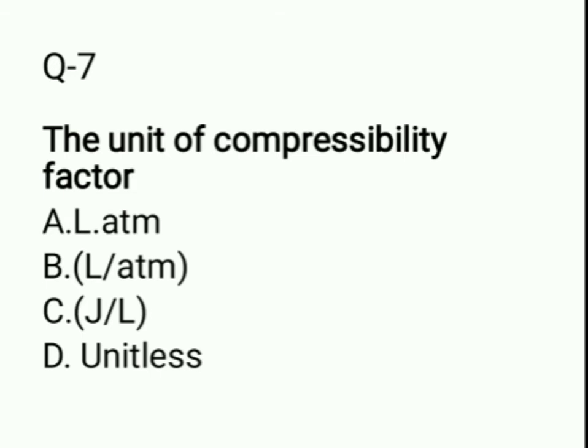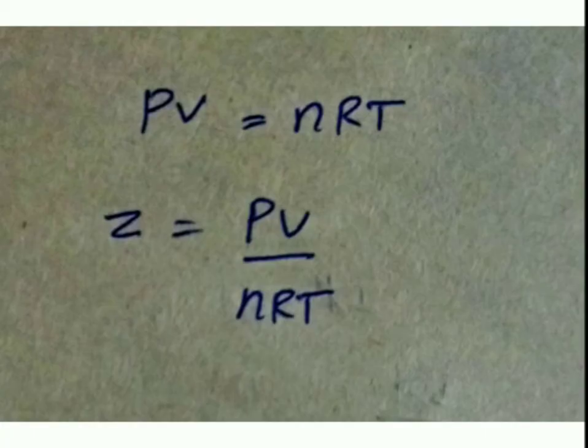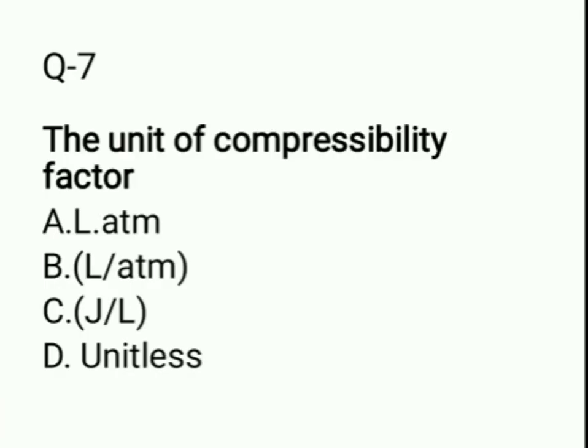Question 7: The unit of the compressibility factor is — option A: liter·atm; option B: liter per atm; option C: joule per liter; option D: unitless. Since Z = PV/nRT, and PV = nRT for an ideal gas, Z = PV/PV — so Z has no unit. Option D is the correct answer.